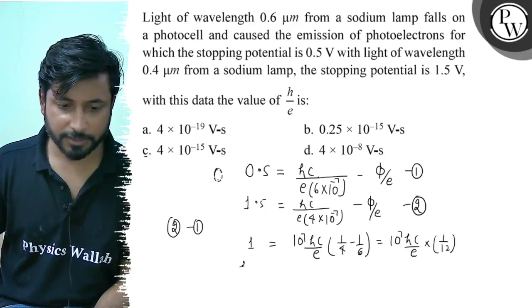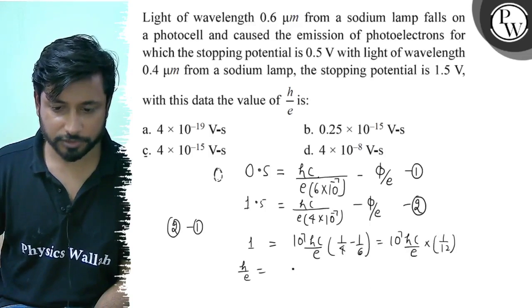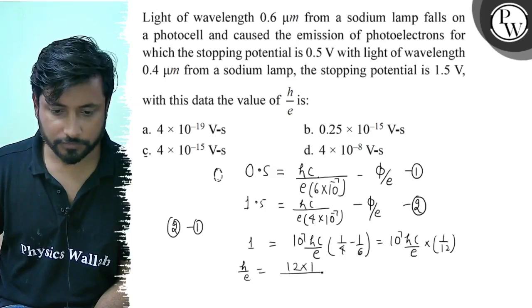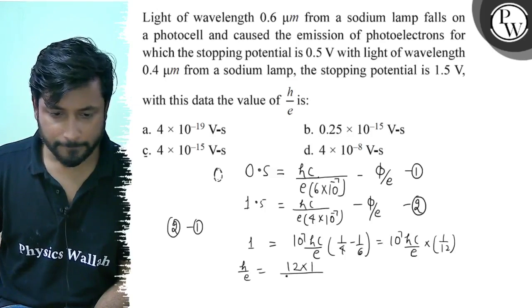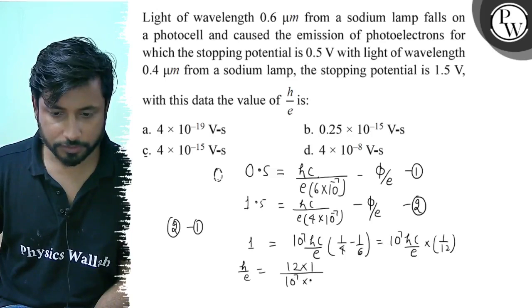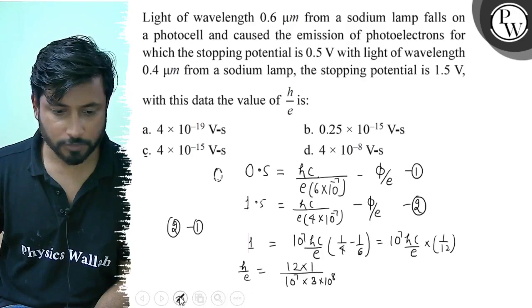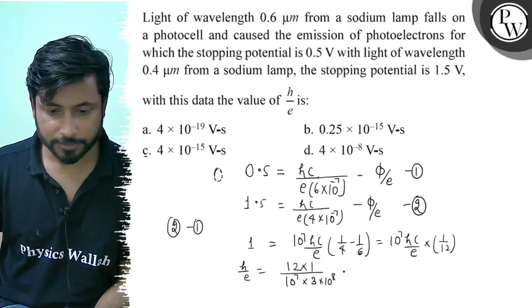You can see this is h by e. h by e is equal to 12 into 1 divided by 10 to the power minus 7 into c. C is equal to 3 into 10 to the power 8. This is 1 by 10 to the power minus 7. Now this is 4 by 10 to the power minus 7.